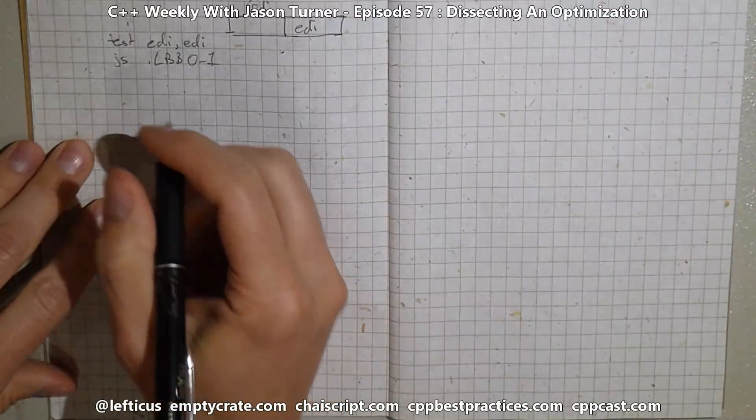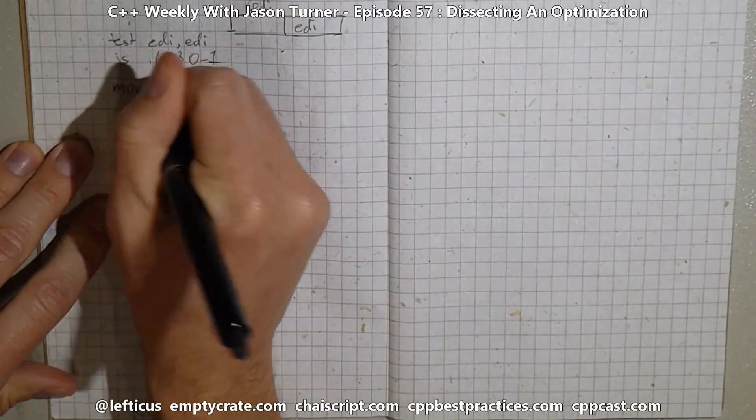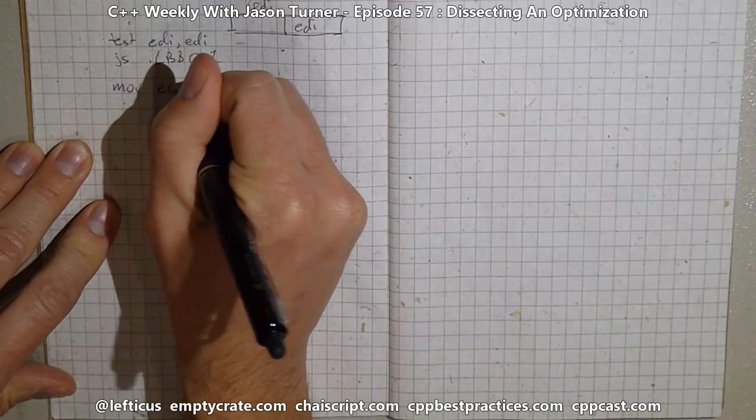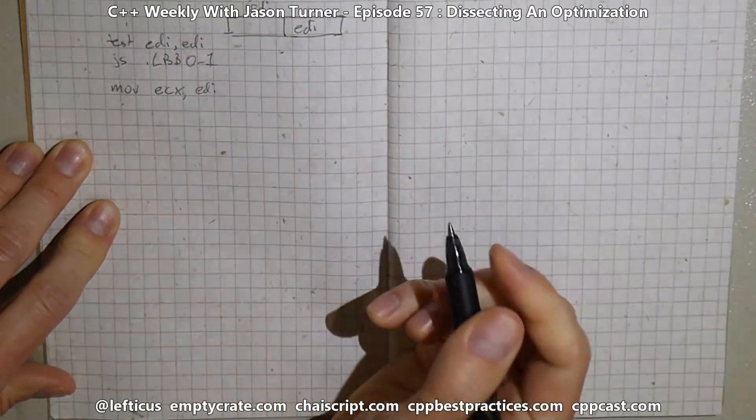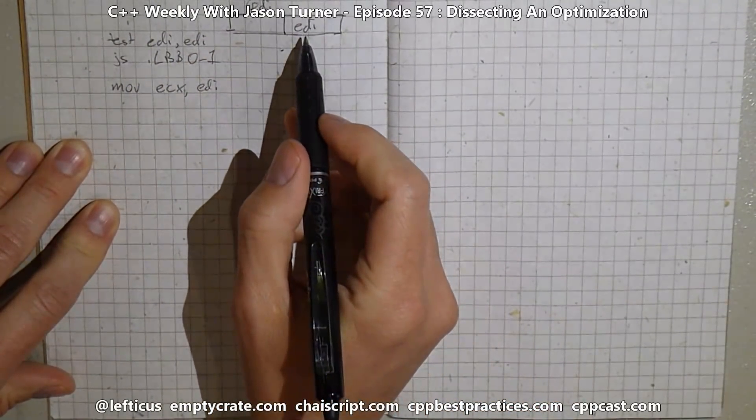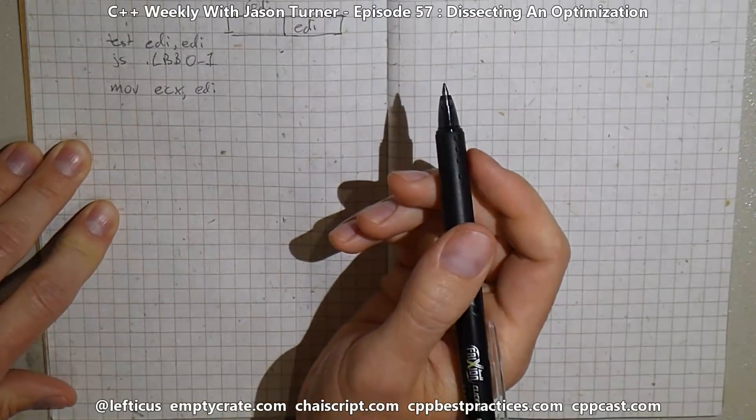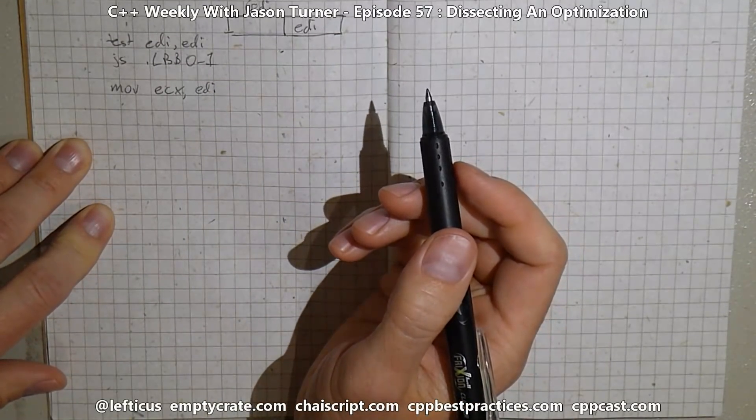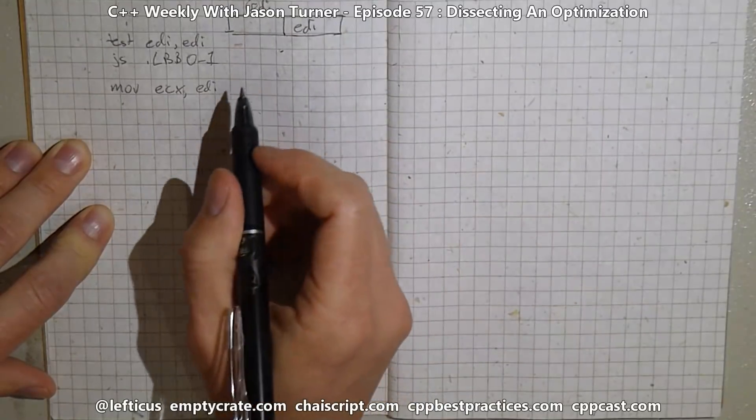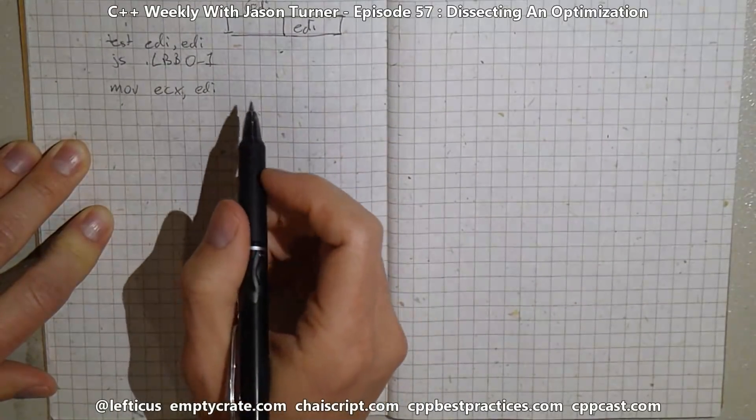Then our next line, move ECX, EDI. We're saying we're going to make a copy of EDI. And EDI is the count. That's what came in from our count parameter in our sum function. So now ECX is equal to EDI. That's easy to handle.